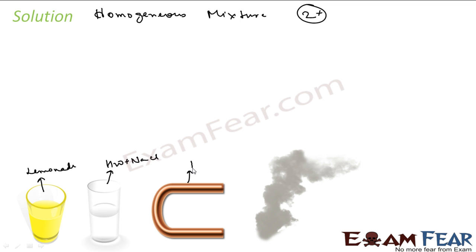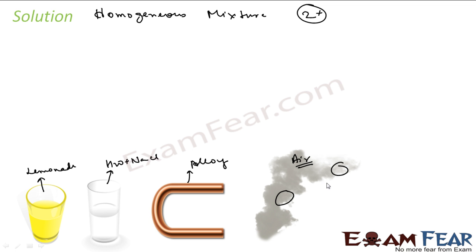Or it can be an alloy — brass, for example. Air is also a good example of a mixture. Because if you take air composition from here and here, you will see the same composition. If you take samples from two places in the same room, you will find almost the same composition of air.